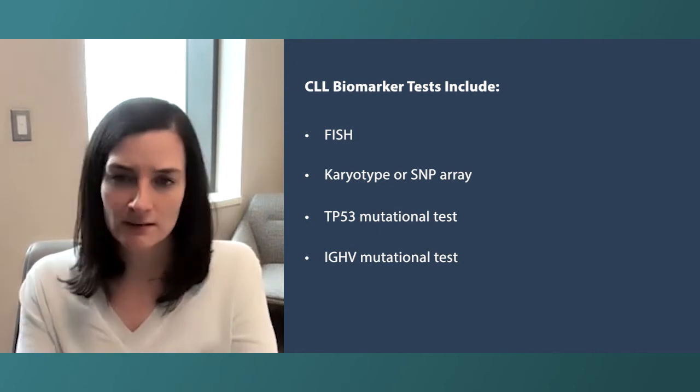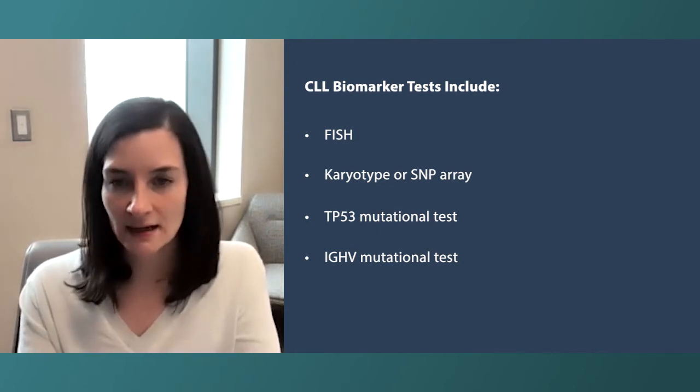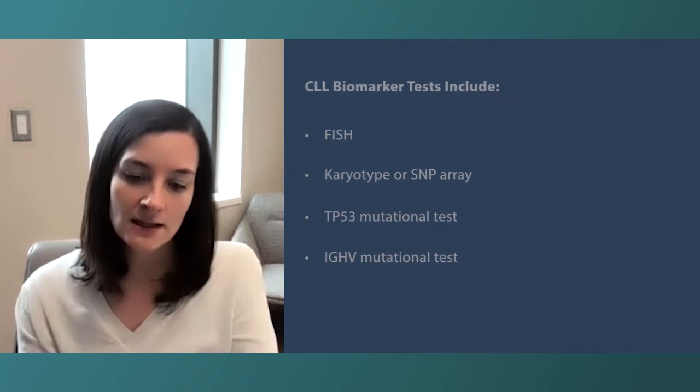TP53 mutational testing is done through next-generation sequencing. We use a fancy spell-check to see if there are any misspellings in TP53. TP53 is a gene called the guardian of the genome — its job is to make sure that as cells reproduce, they keep all of their genes in working order. If TP53 is missing or misspelled, it doesn't work as well, and that's when people can get more issues with their CLL — it tends to behave a little more aggressively.